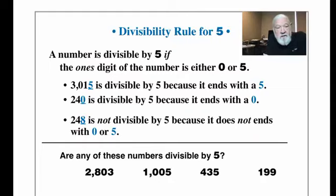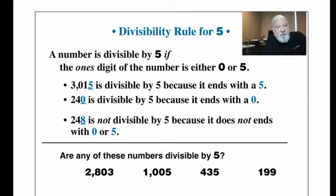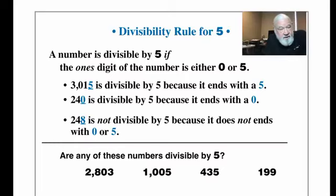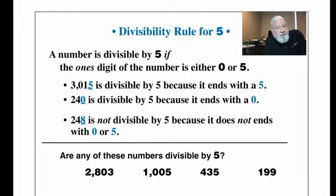The divisibility rule for five is: a number is divisible by five if the ones digit is either a zero or a five. Looking at the examples: the first two end in five and zero respectively, so each is divisible by five. 248 ends in eight — not a zero or five — so it's not divisible by five. From the practice numbers: 2008 is not, 1005 ends in five so it is, 435 ends in five so it is, and 199 ends in nine so it is not.